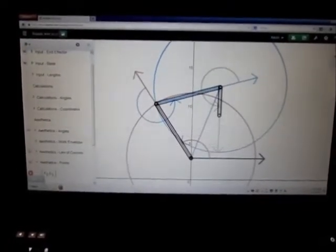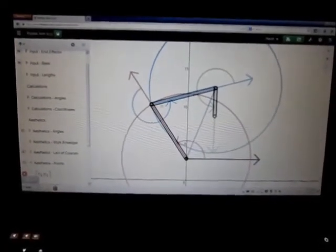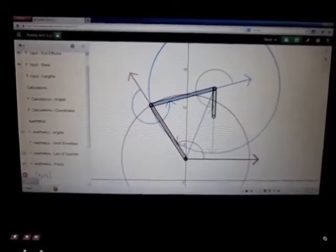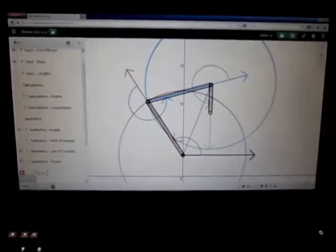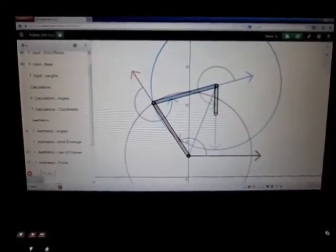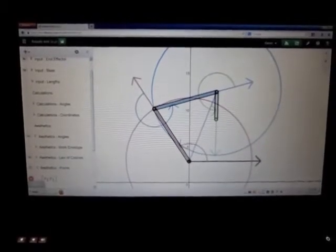The idea is that this arm can be anywhere in this circle, and this arm can be anywhere in this red circle. So we have to find the point where these two circles intersect. There are two points, here and here. We automatically assume that we're using this one.